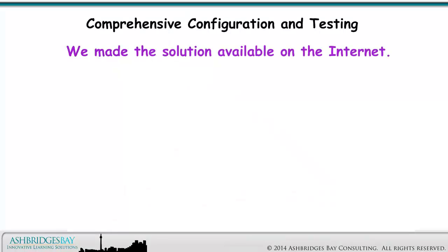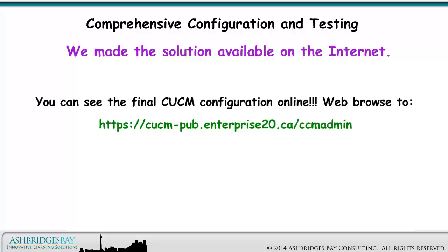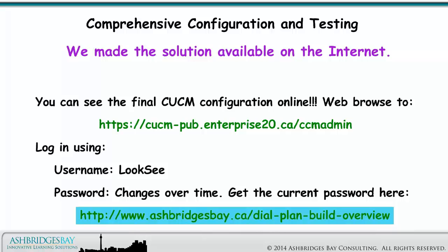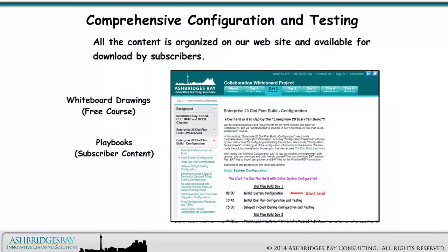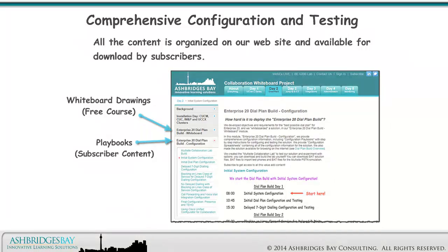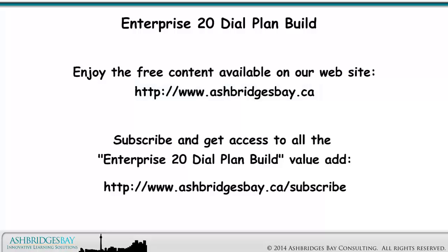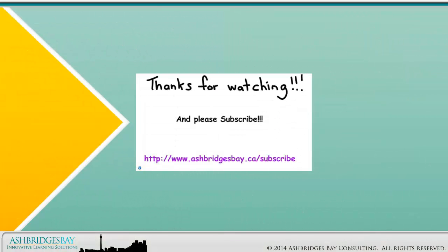We made the solution available on the internet. You can see the final CUCM configuration online — web browse to this address, log in using username LookSee and the password, which changes over time. Get the current password on the website. Many lists can be sorted based on description. All content is organized on our website and available for download by subscribers. Enjoy the free content available on our website, subscribe and get access to all the Enterprise 20 dial plan build value-add. Thanks for watching and please subscribe.